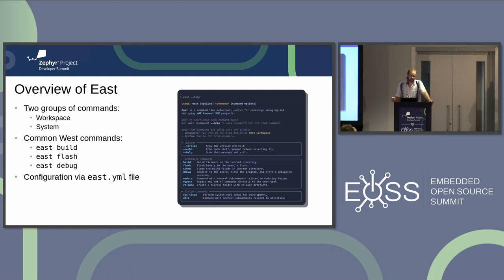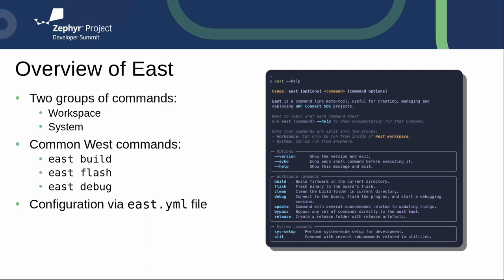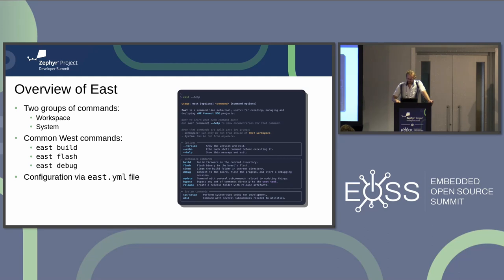This is a screenshot of the help output. Generally, we split commands into different groups called workspace and system. Workspace commands can only be run inside a West workspace — anything that has a .west folder inside it and all its subdirectories. Some commands only make sense if run inside this context. System commands can be run anywhere. EAST has some common West commands like build, flash, and debug, and like I said, you can configure it via YAML file.